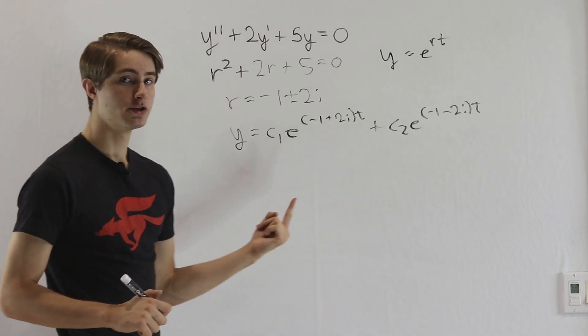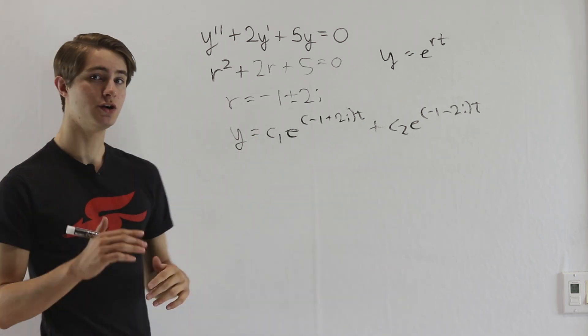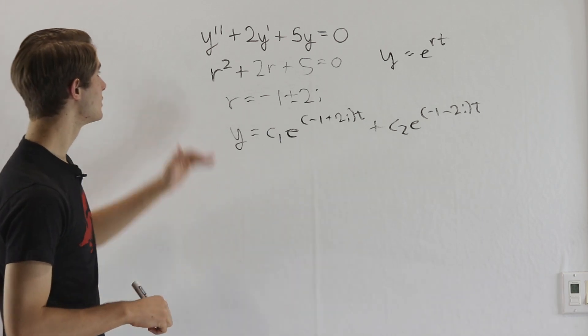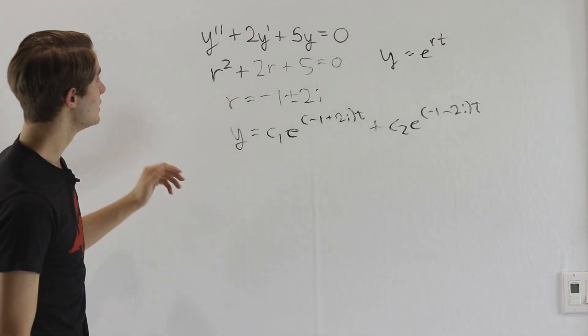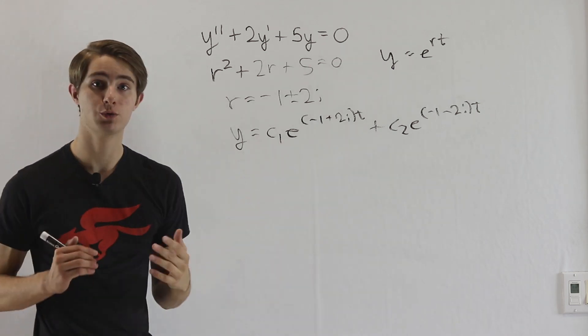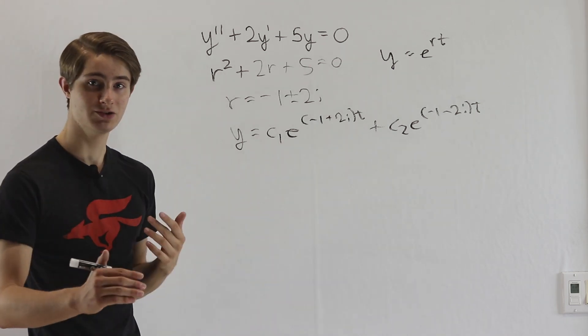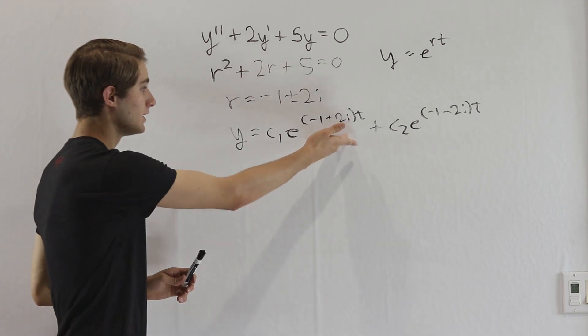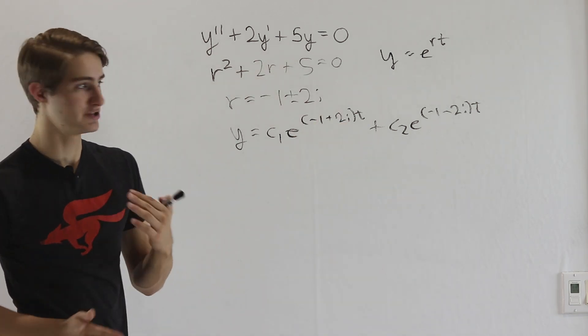Now if you wrote your solution in this form, you wouldn't technically be wrong, but it also wouldn't be very helpful. Because remember that our original differential equation only has real numbers, which means this could be modeling a real world situation of something like displacement over time. So having complex numbers in it doesn't really make that much sense.